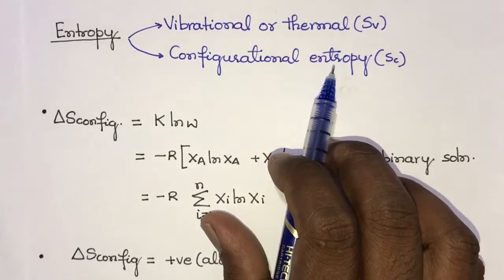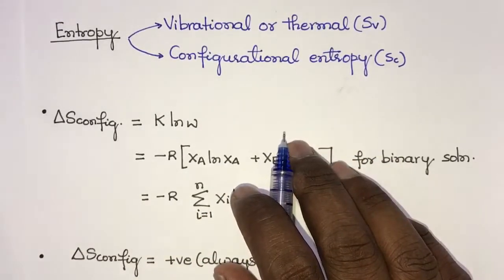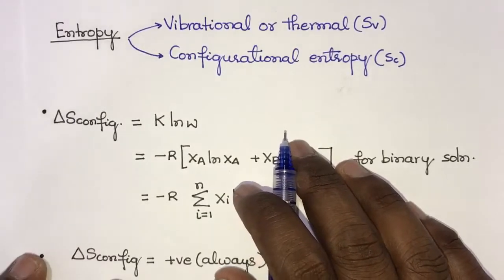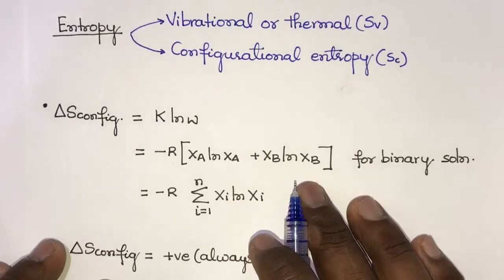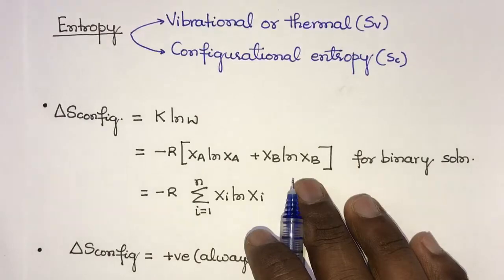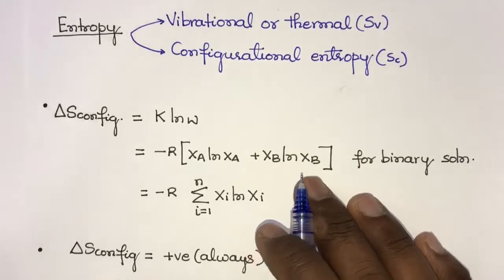In ordered materials like the crystal NaCl, the configurational entropy will be very, very low, but it will not be zero because all materials generally contain some defects. So some amount of configurational entropy must be present. If the material is 100% perfect with no defects and fully ordered, then the configurational entropy will be zero, but this type of material generally does not exist.